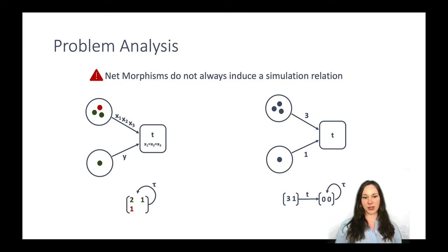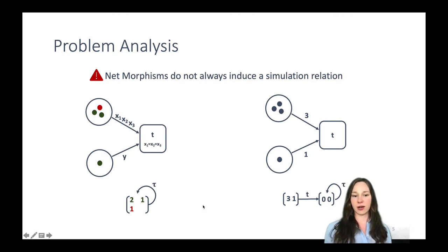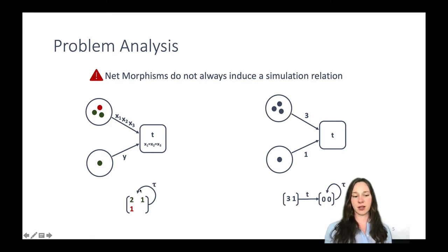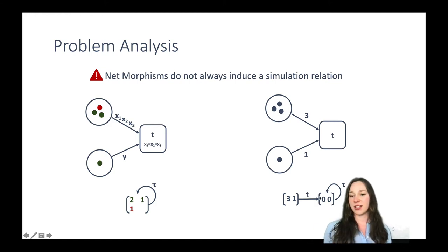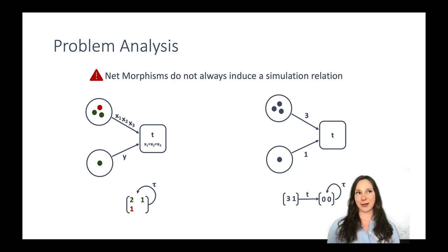What is the problem now with the simulation relation? The simulation relation always needs to preserve the transition relation between related states. This state of the colored Petri Net is related to the first state of the skeleton net. To preserve the transition relation, the only transition in the colored net is the self-loop, so we would need a self-loop here as well. But the only outgoing transition in the (3,1) state is labeled T, meaning T fires and leads to state (0,0). So a deadlock not preserved in the skeleton destroys the simulation.